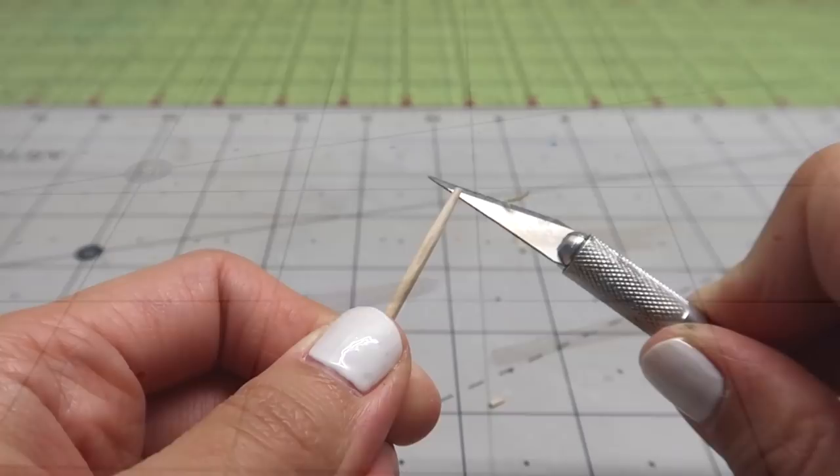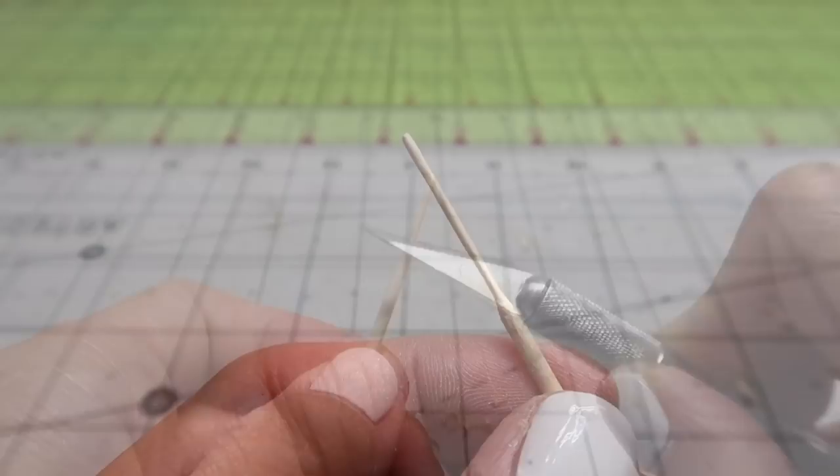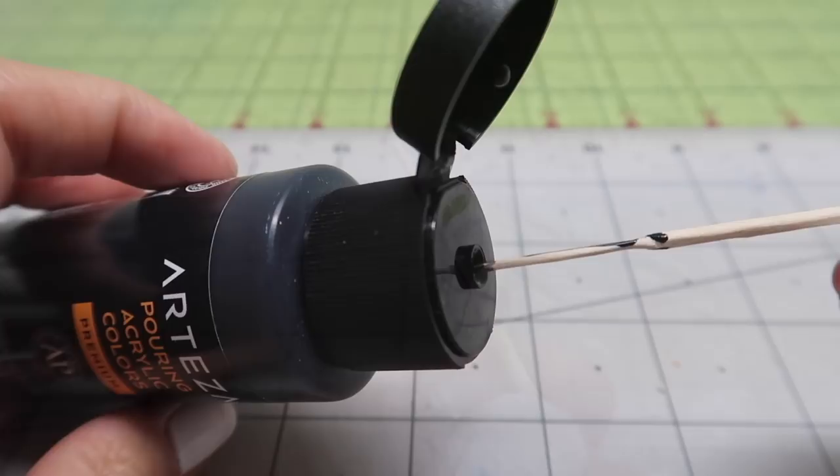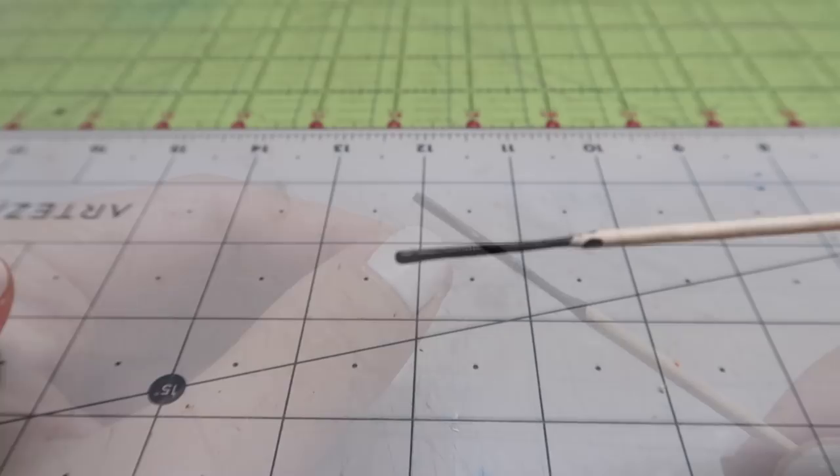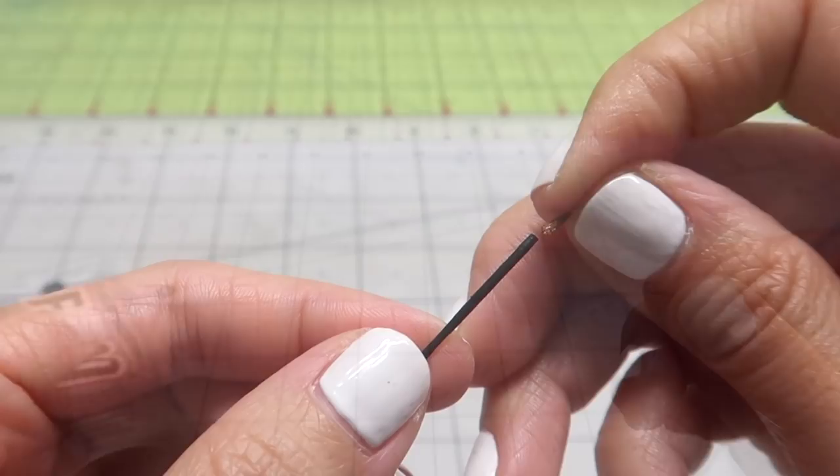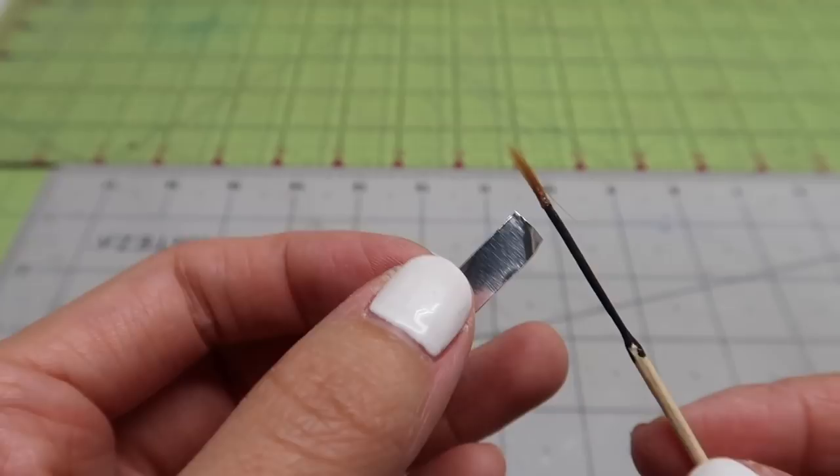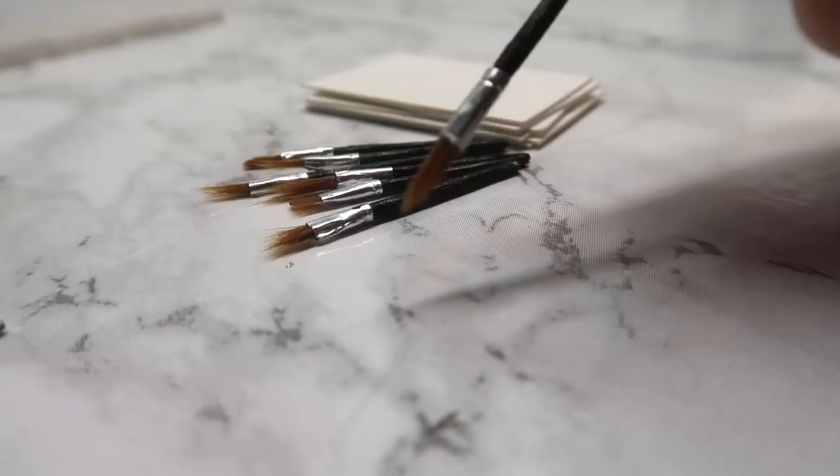While that dries, let's make the handle. I take a toothpick and whittle it down so it's thinner. If you're not comfortable using a knife to do this, you can also use sandpaper or a file to sand the toothpick down. Once it's thin, I dip it into black paint and let it dry. Now we can put the brush together. Glue the bristles to the handle with E6000 glue. Then cut a quarter inch strip of foil and wrap it around the brush where the bristles and the handle meet. That's it.